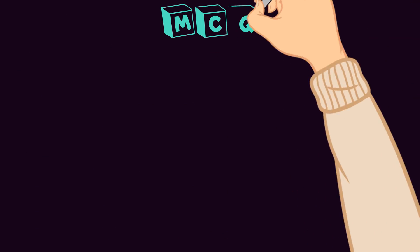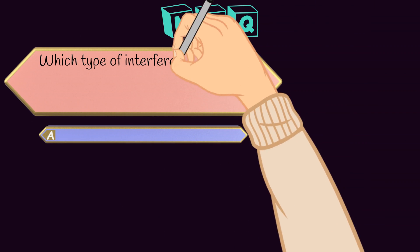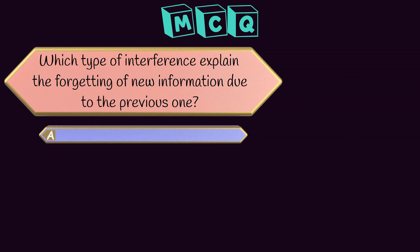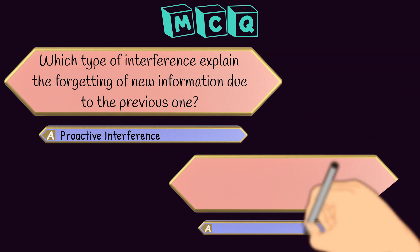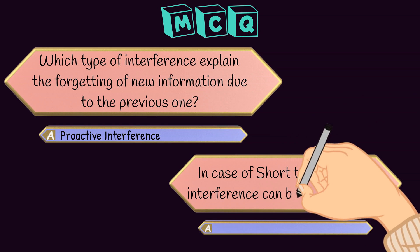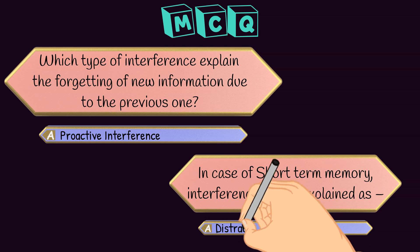Let's review what we have learned. Question one: which type of interference explains forgetting of new information due to previous information? The answer is proactive interference. Question two: in the case of short-term memory, how is interference explained? As we learned in this presentation, interference in short-term memory can be explained as distractions or disruptions.